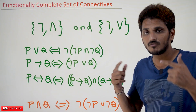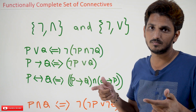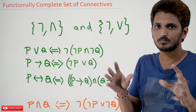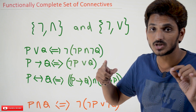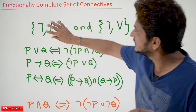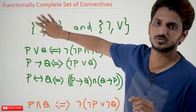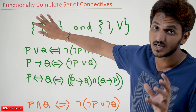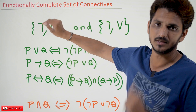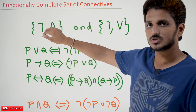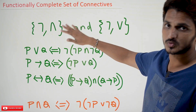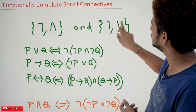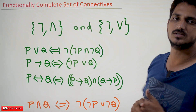What's the meaning of functionally complete set? It means if you take any proposition, we can write that proposition using these two connectives — negation and disjunction. That is the meaning of functionally complete.